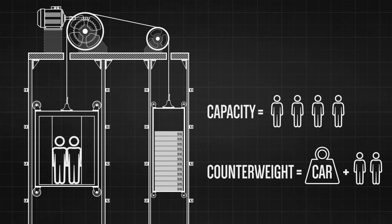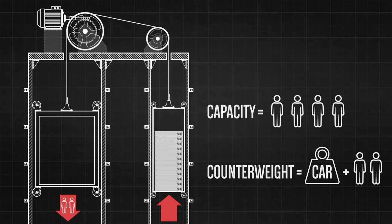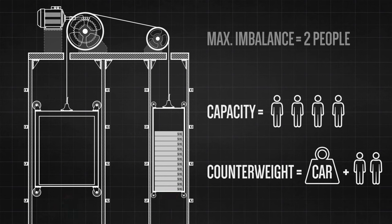When elevator is fully loaded, there is an imbalance of two people. When elevator is not loaded, there is again an imbalance of two people but in opposite direction. This means the imbalance never exceeds two people and the system remains at maximum possible balance.